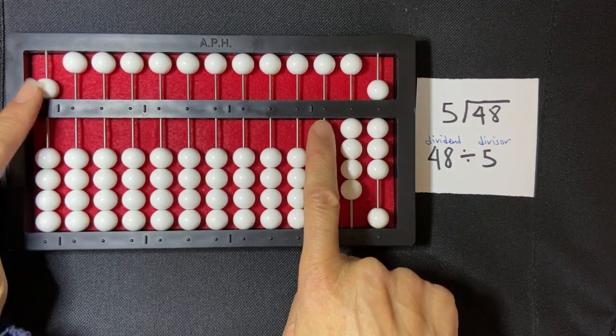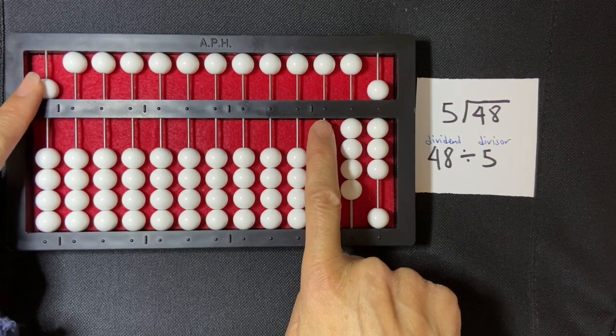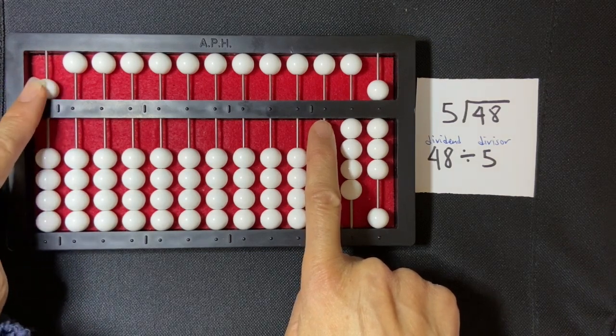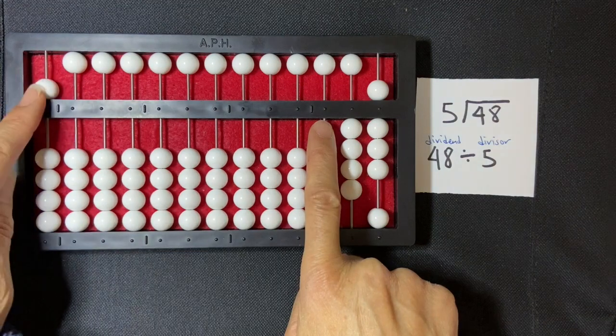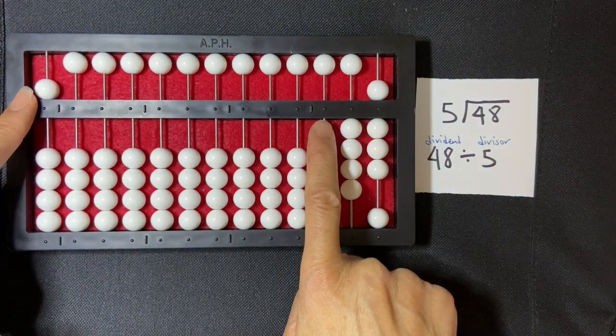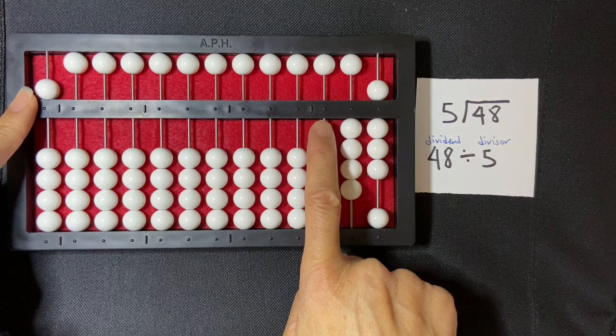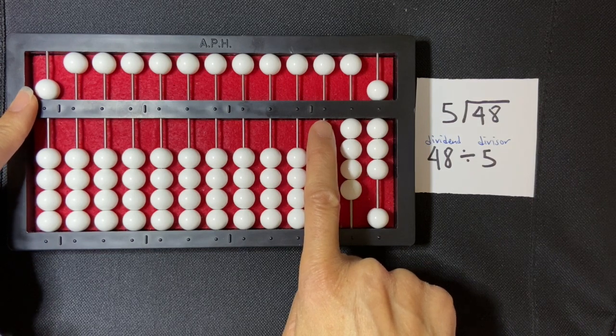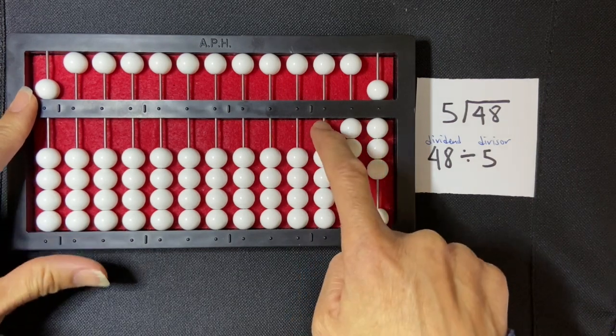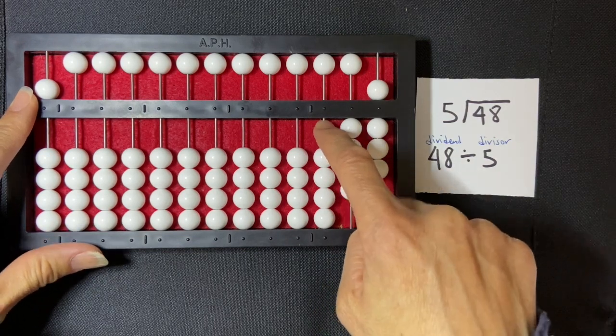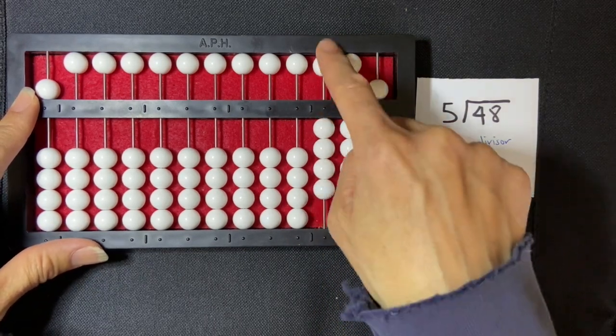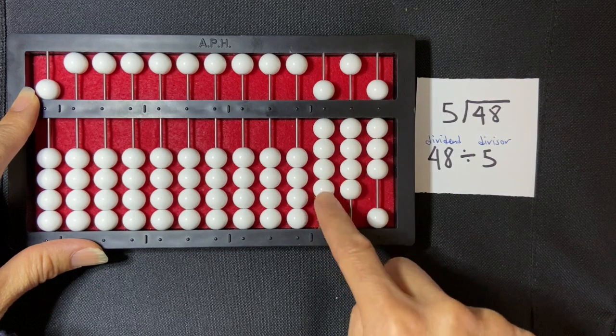So then I'm going to look at my divisor again, 5, and I'm going to see how many times 5 goes into 48. Well, I know that 5 times 9 is 45. So I'm going to set 9 here on my third rod. So 1, 2, 3, 4, 5, 6, 7, 8, 9.